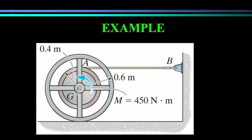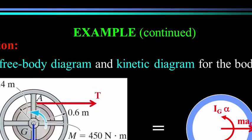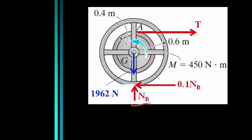Here's an example problem. We have a spool with a mass of 200 kg and a radius of gyration of 0.3 m. The coefficient of kinetic friction between the spool and the ground is 0.1. Find the angular acceleration alpha of the spool and the tension in the cable. Note that there is also an applied moment of 450 N·m.